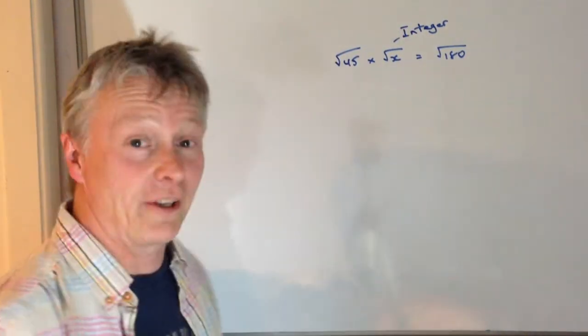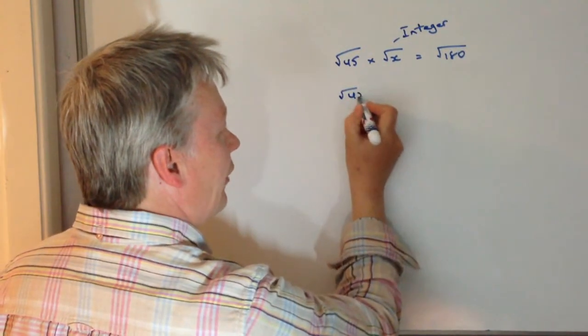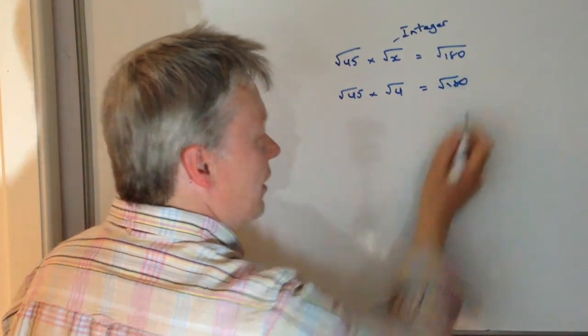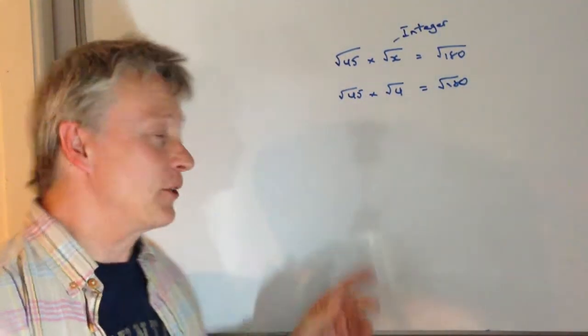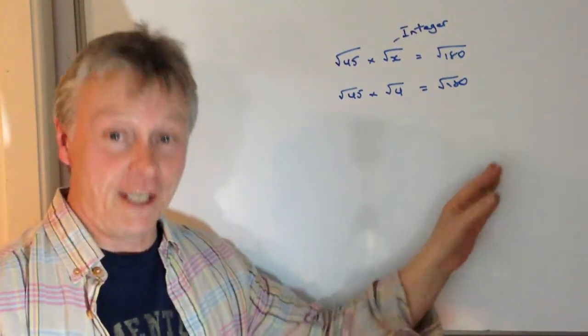Well, you can either work that out in a calculator, or you know that root 45 times root 4 equals 180, so just completely ignore the square root signs at the moment. 45 times 4 equals 180.